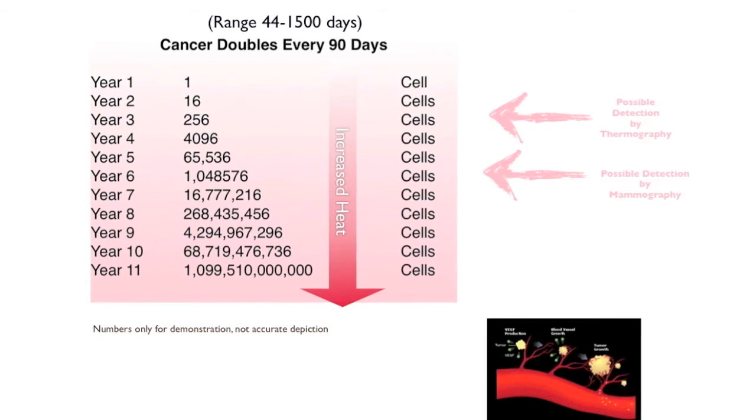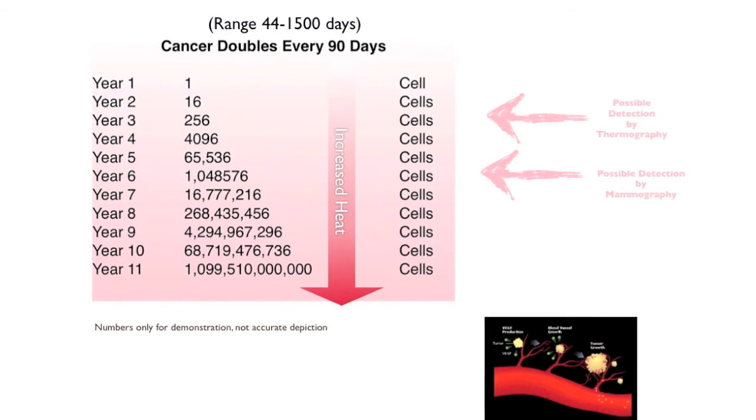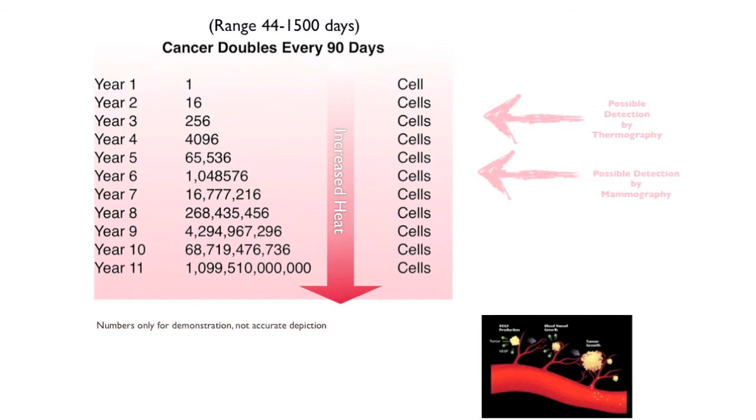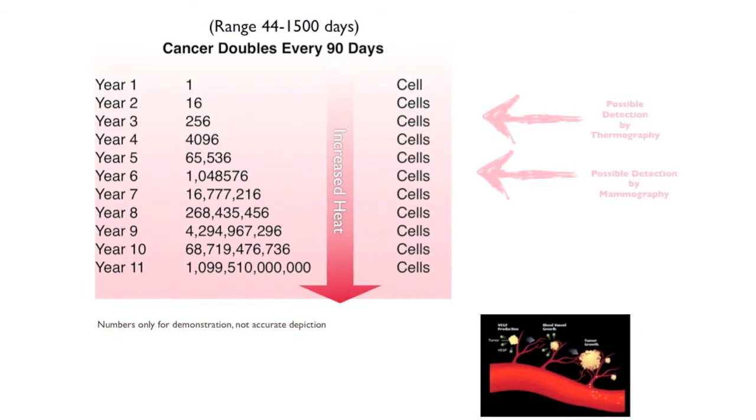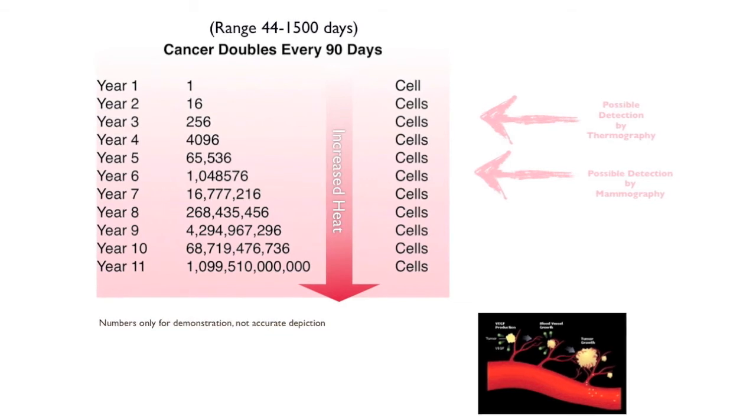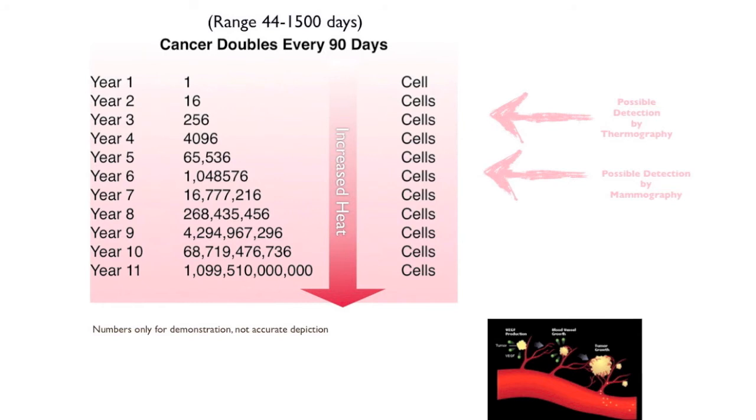So what the proper statement should be is that a thermogram may show up to 10 years before a mammogram, a positive cancerous finding. That's quite different than saying, in every case, it's going to show up 10 years before a mammogram. That's just unbelievable and certainly untrue.